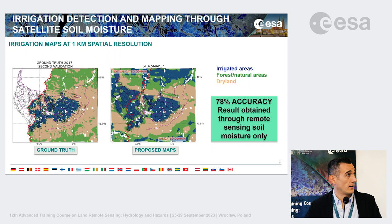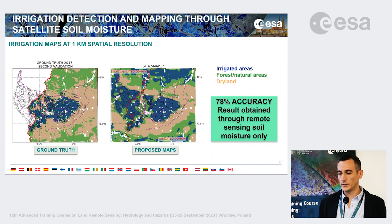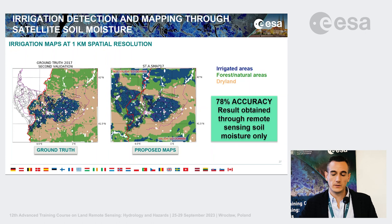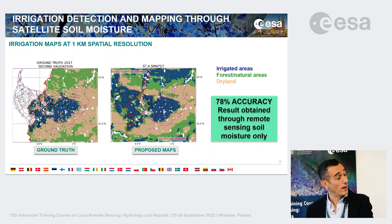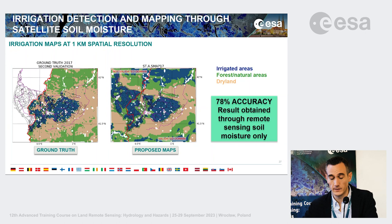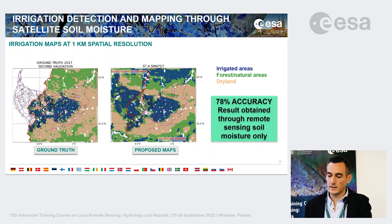Using these maps as input to the k-means clustering algorithm with three clusters — non-irrigated, dryland, and irrigated — the resulting classification map shows good agreement with the available ground truth. The overall accuracy is 78%, which is particularly notable given that these results are obtained using remote sensing soil moisture only — a powerful result from this simple approach.